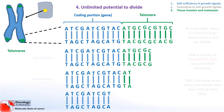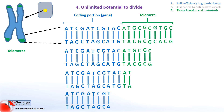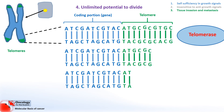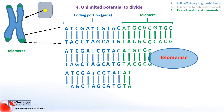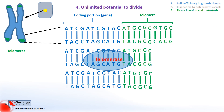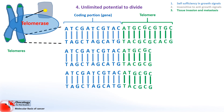The way cancerous cells get around this is by activating an enzyme — a protein called telomerase — that adds DNA bases to the telomeres to make them longer. This allows the cell to keep dividing without eating into the coding portions of DNA.